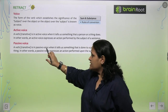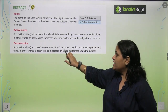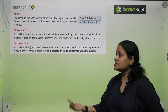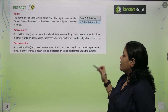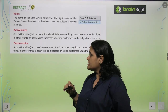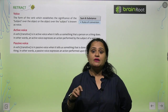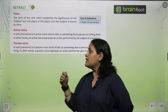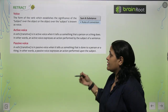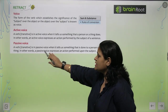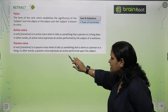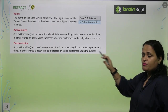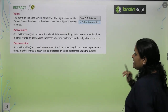Ab passive kya hai? A verb is in Passive Voice when it tells us something that is done to a person or a thing. Passive Voice kya hoti hai? Jab hum ye batate hain ki ye kaam us person ke dwara kiya gaya hai. In other words, a Passive Voice expresses an action performed upon the subject.